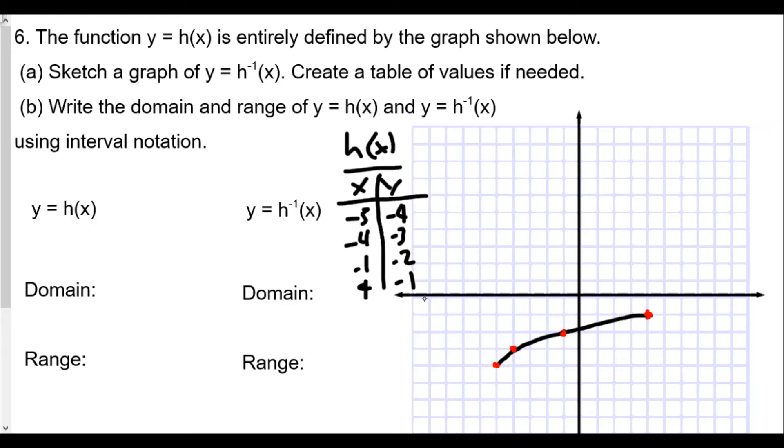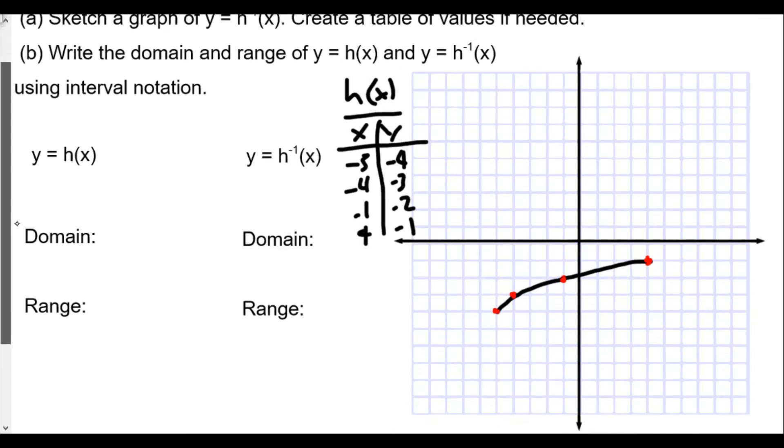Therefore if we're going to find the inverse, we're just going to switch all of the x's and y's. Instead of negative 5, negative 4, it's going to be negative 4, negative 5. Negative 4, negative 3 becomes negative 3, negative 4. Negative 1, negative 2 becomes negative 2, negative 1. And 4, negative 1 becomes negative 1, 4. We plot these points on the graph.